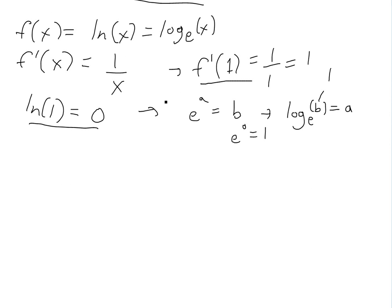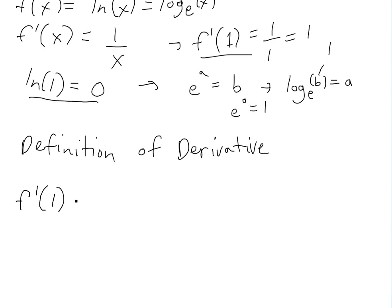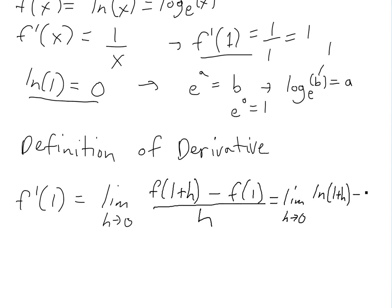So now we know that f'(1) is 1. But if we look at the definition of derivative, we'll get f'(1) equals limit as h approaches 0 of f(1+h) minus f(1) divided by h. So then if we plug those numbers in, we'll get basically limit h approaches 0 of ln(1+h) minus ln(1), which is 0, over h.